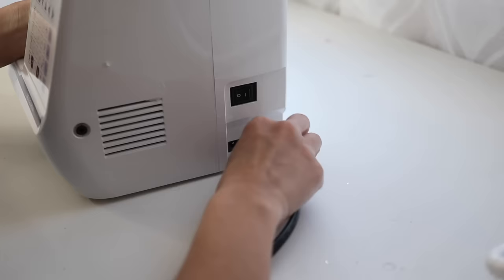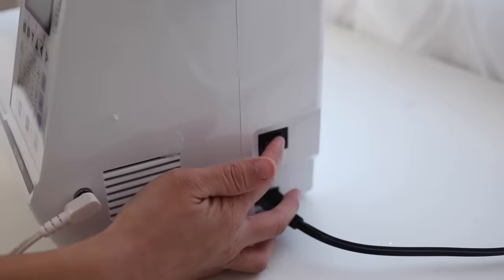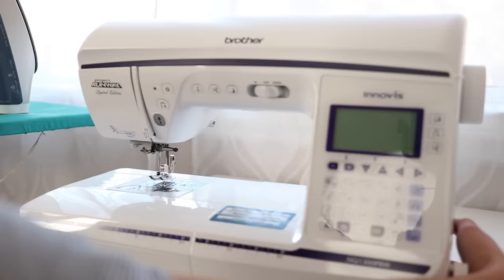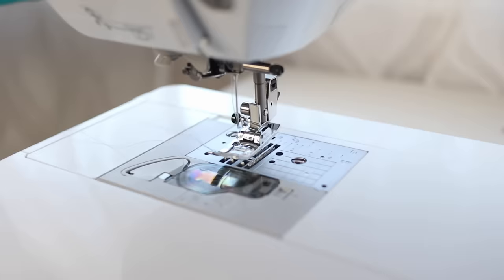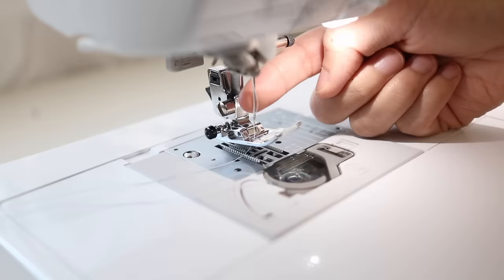First, plug the power cord and presser foot into the side of the machine. Then turn your machine on. I have a computerized sewing machine so the screen will light up and all the functions get resetted.